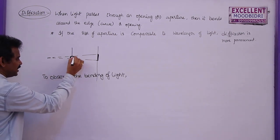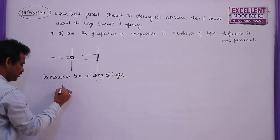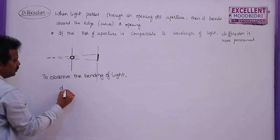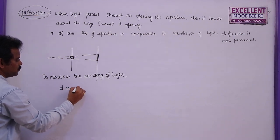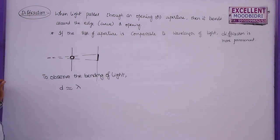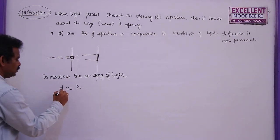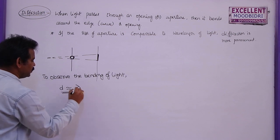Let us say the size of this aperture is d, which is nearly equal to the wavelength of light passing through it. Then diffraction can be observed very easily.